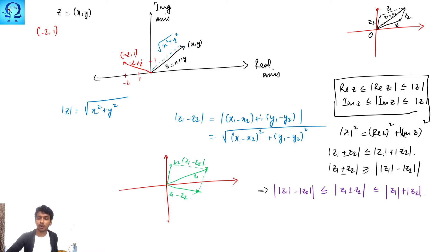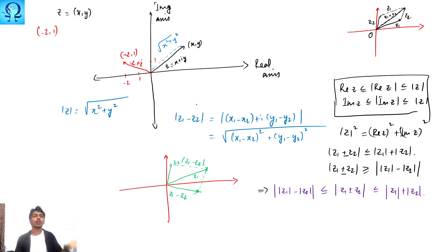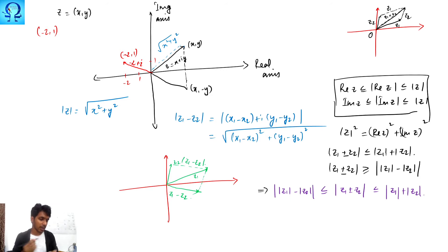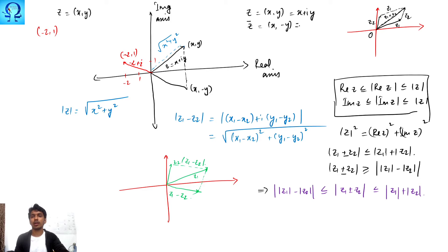The conjugate of a complex number is the reflection of its vector about the real axis. If z = (x, y) or x + iy, then the conjugate z̄ = (x, -y) or x - iy. Properties of conjugates include: (z1 + z2)̄ = z̄1 + z̄2. You can verify this by computing (x1 + x2) + i(y1 + y2) and taking its conjugate.